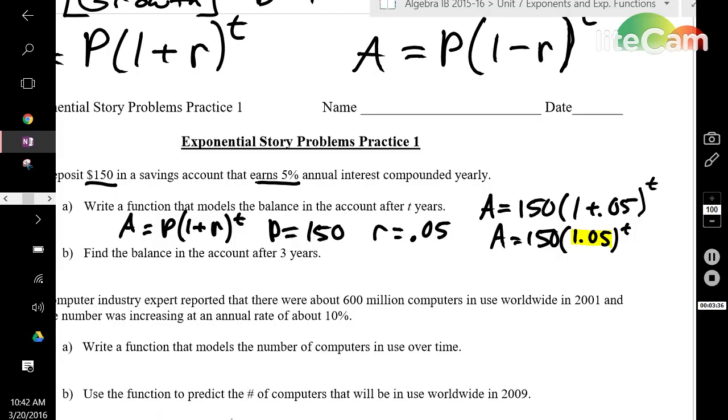Part b says find the balance in the account after 3 years. So plug in 3 for t: 150 times 1.05 to the power of 3. When you calculate this, it's going to be an approximate number. You're going to round to the nearest hundredth because you're dealing with dollars. This turns into $173.64.